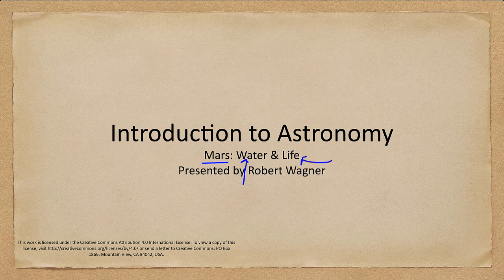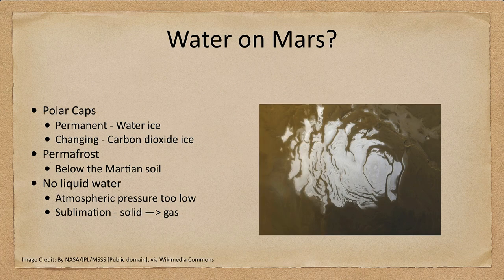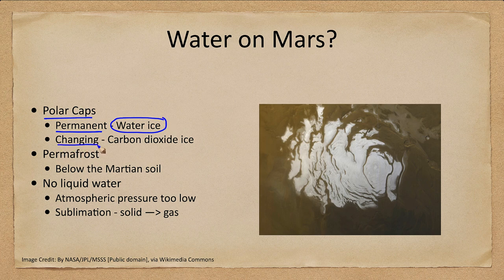Mars is one planet in the solar system that currently has water on its surface. Now it's not liquid water, but the polar caps — there are a couple of them. There is a permanent polar cap which is ordinary water ice, and then there is one that changes and comes and goes with the seasons, and that is carbon dioxide ice, or dry ice.